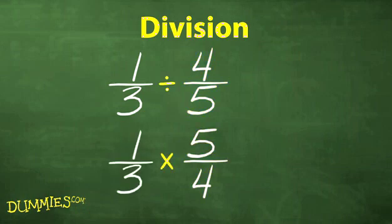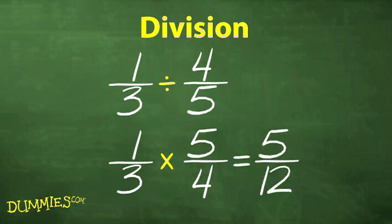Then, change the division sign to a multiplication sign, and multiply the fractions across. Here, we get 5 twelfths.